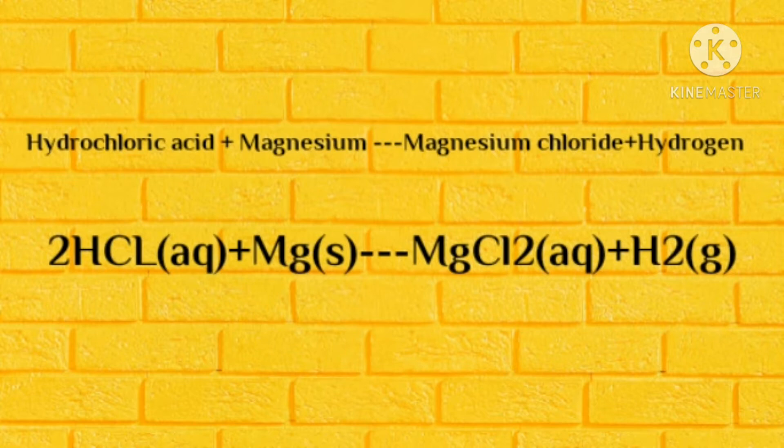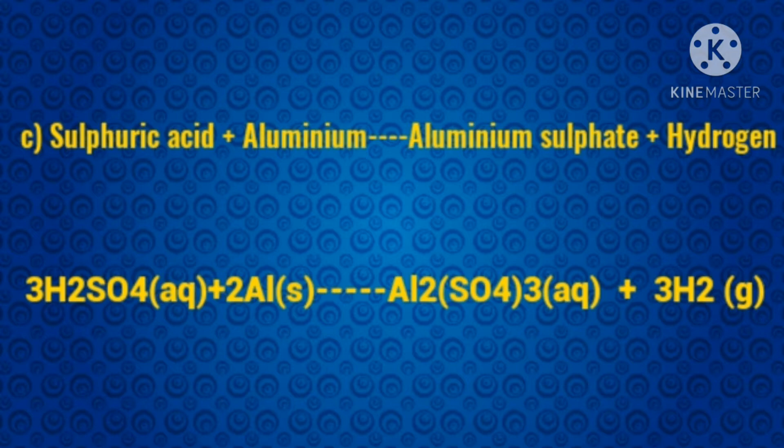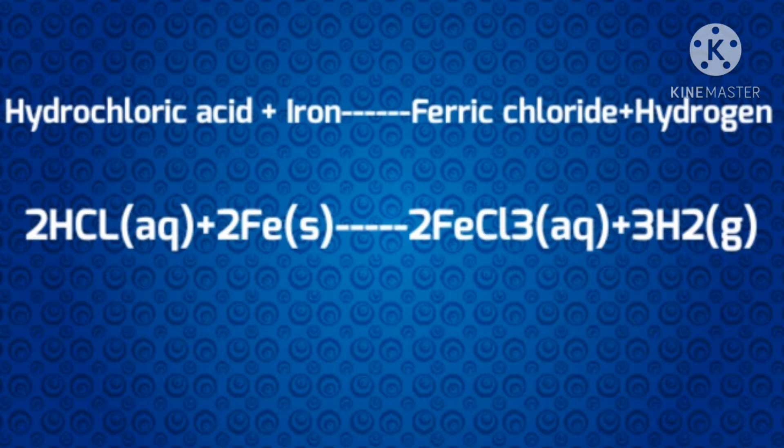Answer B: Hydrochloric acid + Magnesium → Magnesium chloride + Hydrogen. 2HCl (aq) + Mg (s) → MgCl₂ (aq) + H₂ (g). Answer C: Sulfuric acid + Aluminum → Al₂(SO₄)₃ (aq) + 3H₂. Answer D: Hydrochloric acid + Iron → Ferric chloride + Hydrogen. 2HCl (aq) + 2Fe (s) → 2FeCl₃ (aq) + 3H₂.